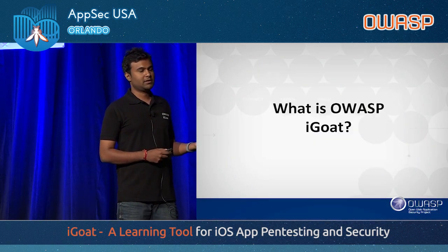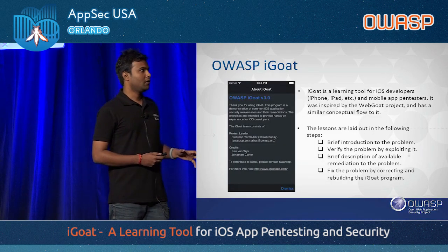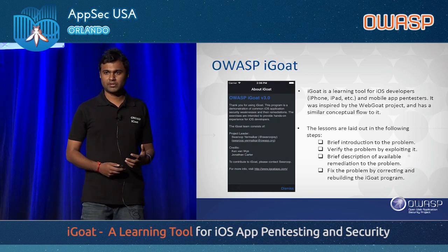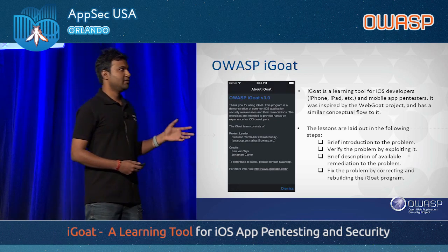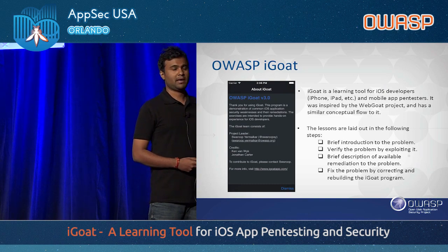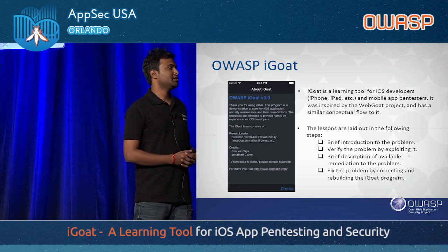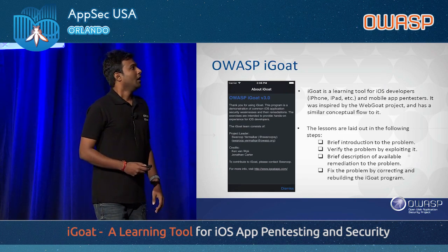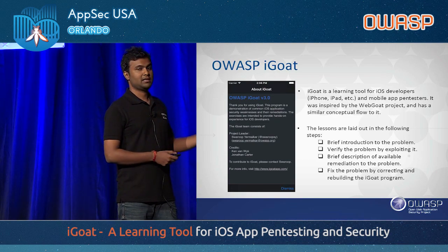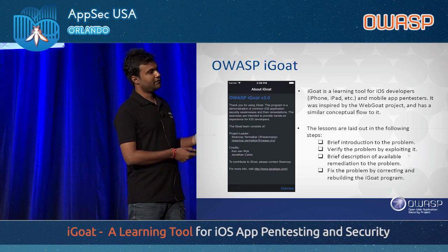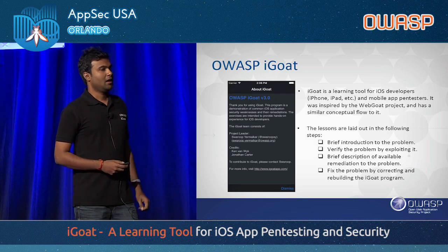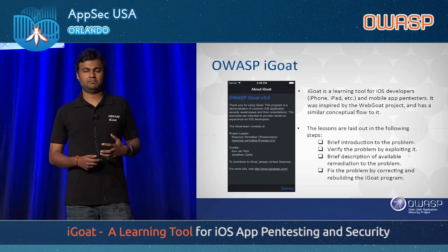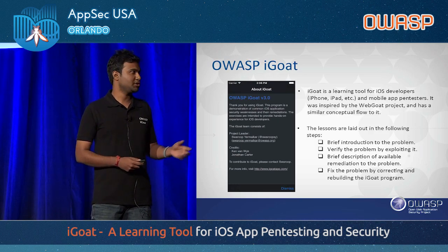Here we go — what is OWASP iGOT and how it helps with iOS security. OWASP iGOT is a learning tool for iOS developers and mobile app pen testers. It was inspired by WebGoat. It has lessons laid out in the following steps: a brief introduction to the problem, verifying the problem by exploiting it, a brief discussion of available remediation, and fixing the problem by correcting and rebuilding the code — because this project covers both attack and fix. It's free and open source with the code on GitHub. Currently it has 25-30 vulnerabilities in a client-server architecture, with contributors from all over the world making it developer-driven.